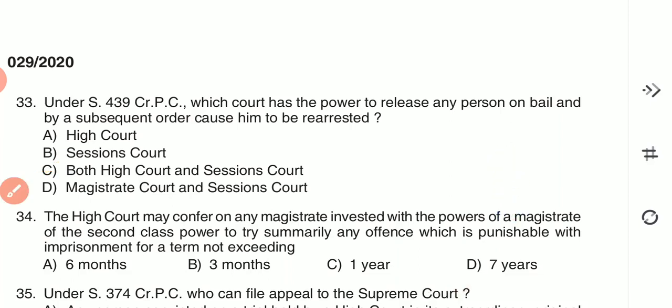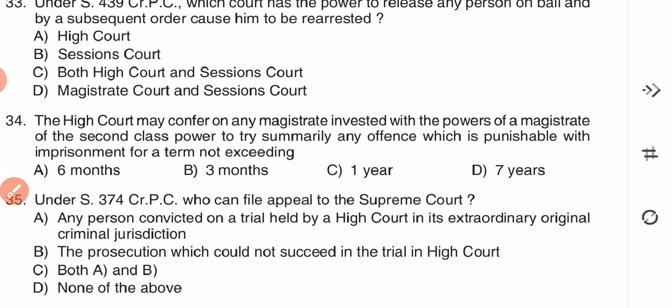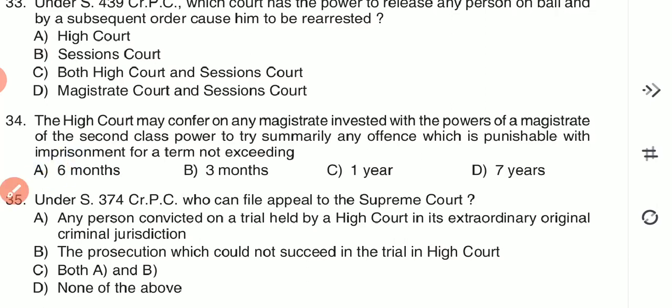Question 34: The High Court may confer on any magistrate invested with the powers of a magistrate of the second class the power to try summarily any offense punishable with imprisonment for a term not exceeding — (A) six months. The answer is A — six months.